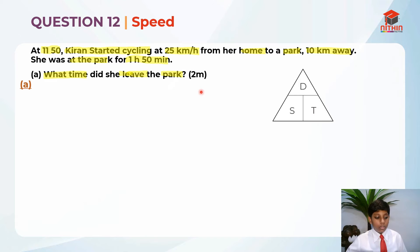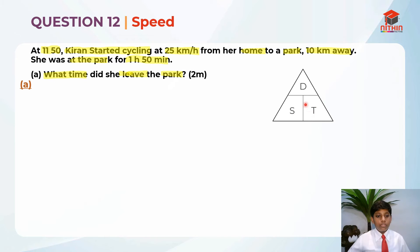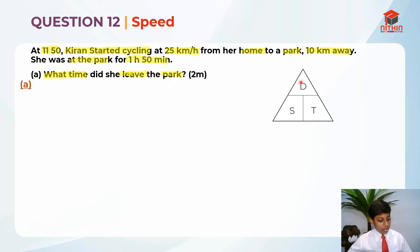When we meet with speed questions, we should always draw the DST triangle. The DST triangle represents distance, speed, and time. If you want to find distance, we take speed times time. If you want to find time, we take distance over speed. And if you want to find speed, we take distance over time.